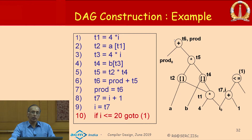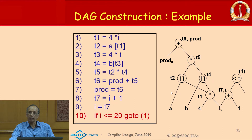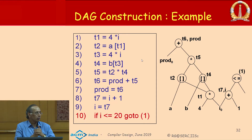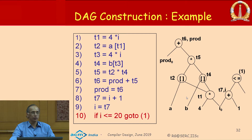Now we have a sequence of intermediate statements and the corresponding DAG, which already has common subexpressions removed. If we can generate code efficiently for this DAG, that means we are able to generate code while looking at the entire basic block — knowing what is being used and what is not. This is a better situation than the simple code generator, which could not even see the next statement.